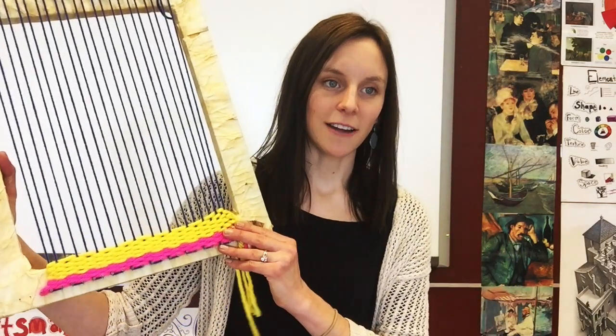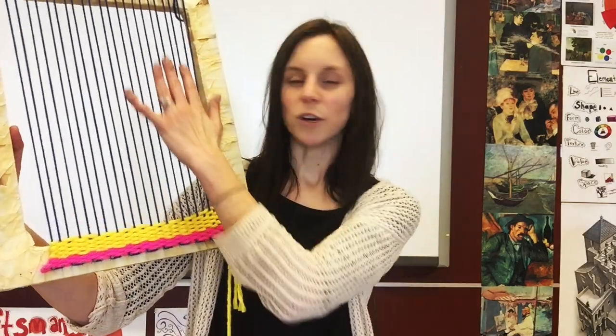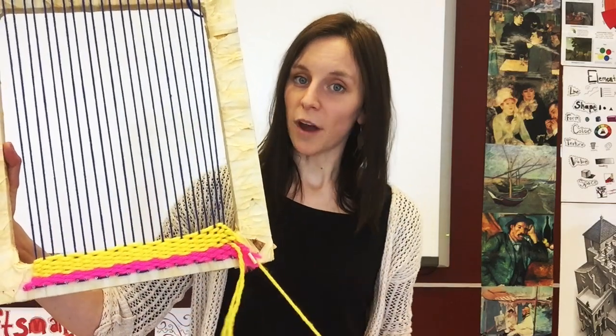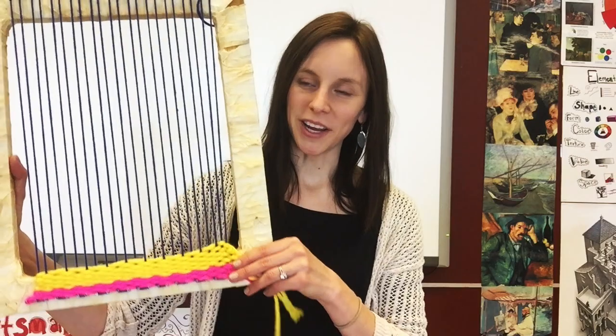So I have an example of a weaving that's not finished here, and the warp strings are the strings that are going up and down. Then there's also strings that are going horizontally, these are called the weft, and you can remember that because the weft goes left and right. So with that being said, let's get started.